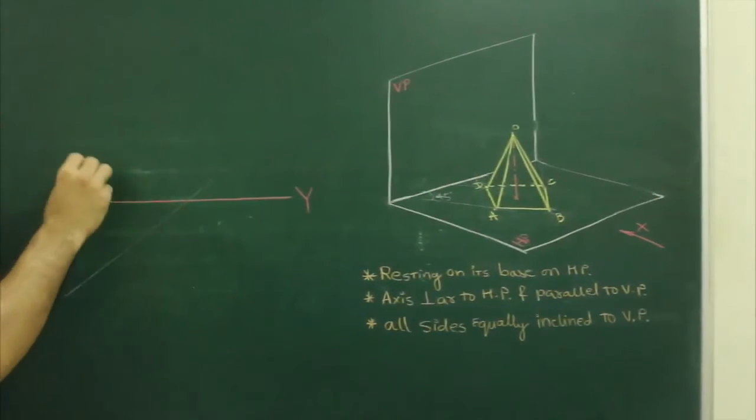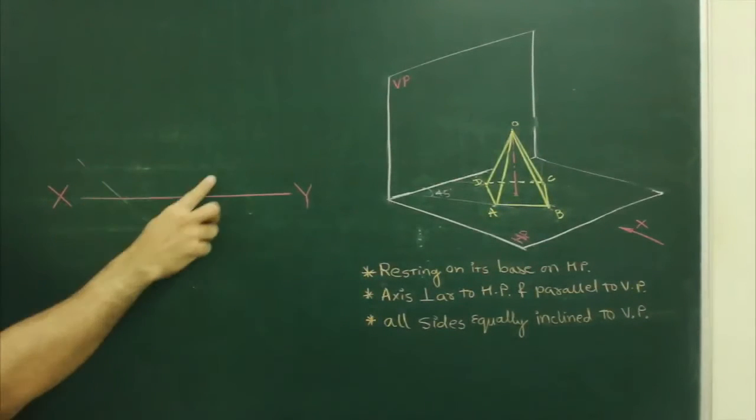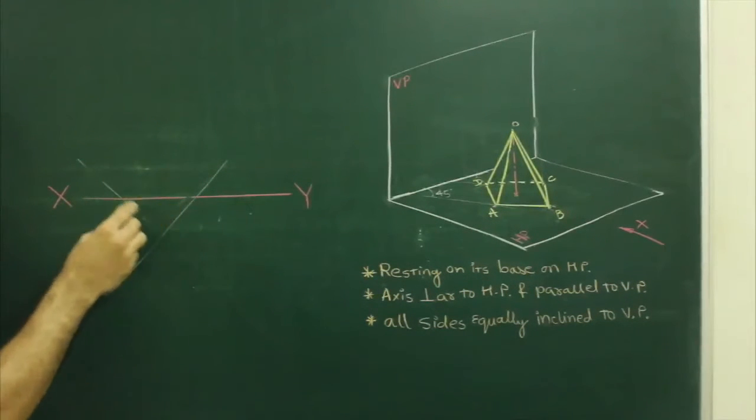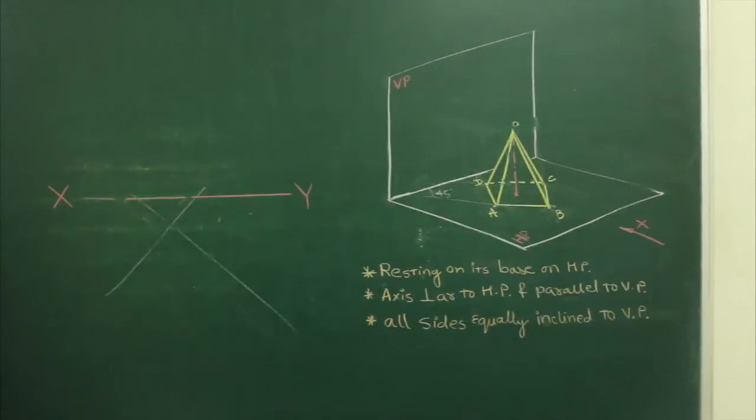So what we will do? We will draw 45-45. Then we will take 30-30.